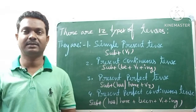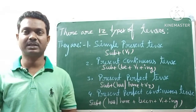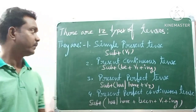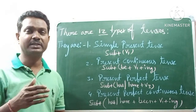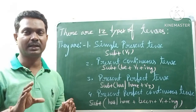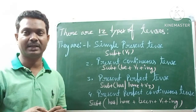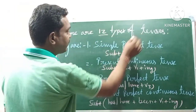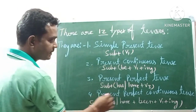In the last class, we covered what tense is and how many times we divide each tense. Now we will do all 12 types of tenses. The 12 types of tenses are: simple present tense, present continuous tense, present perfect tense, and present perfect continuous tense — and so on for past and future.